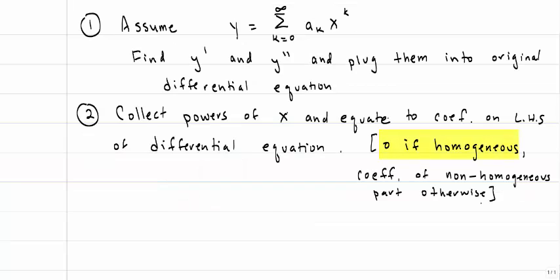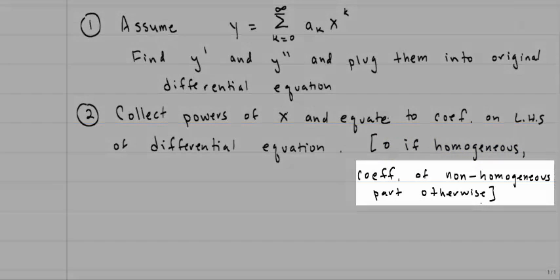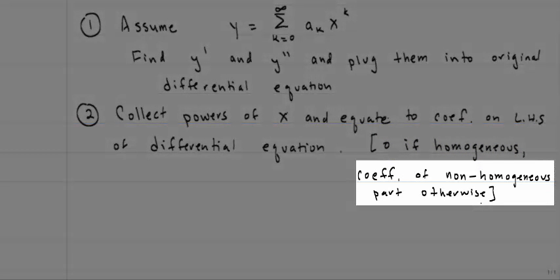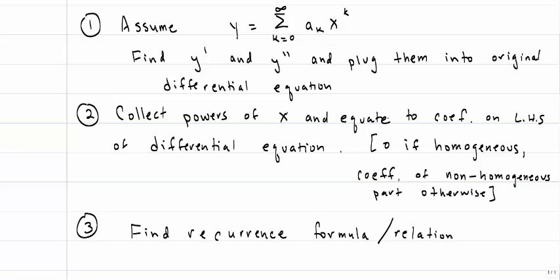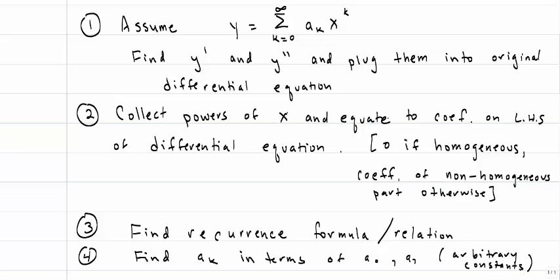If we have a homogeneous equation, this step is very easy because we set them all equal to 0. If it's a non-homogeneous differential equation, we'll have to take the non-homogeneous part, find the power series representation of that, and then equate those coefficients. Step 3 is to find the recurrence formula or relation to determine our a sub k's. The next step is to find a sub k in terms of a0 and a1, which are our arbitrary constants.